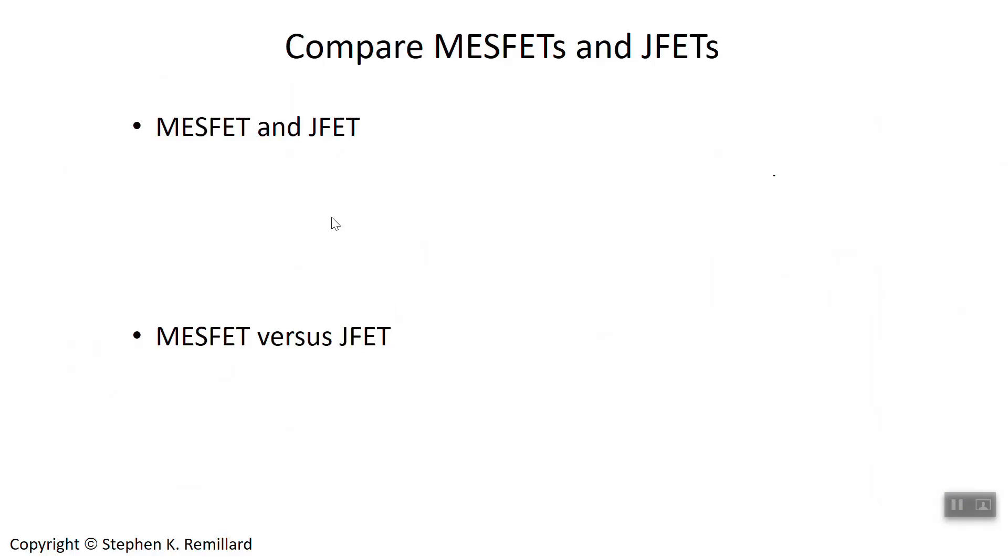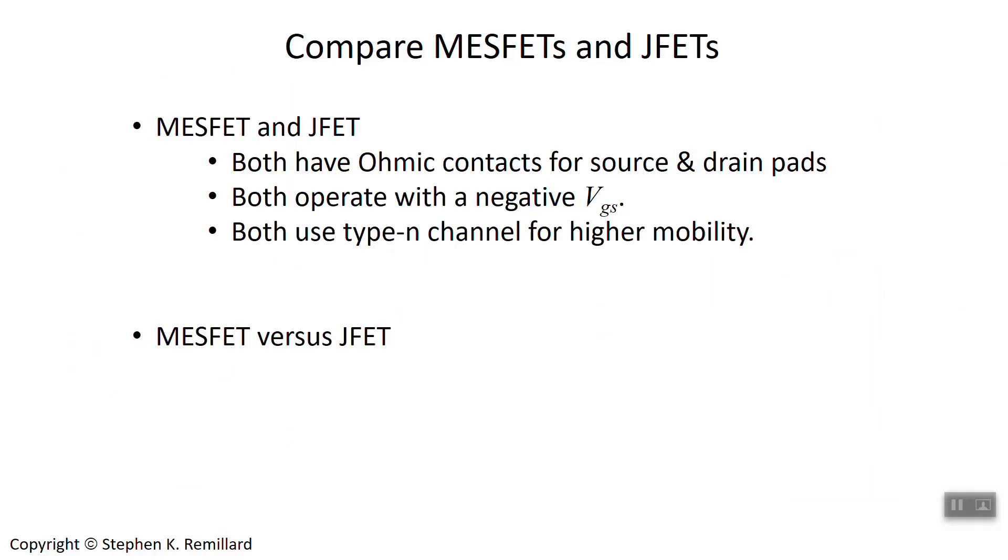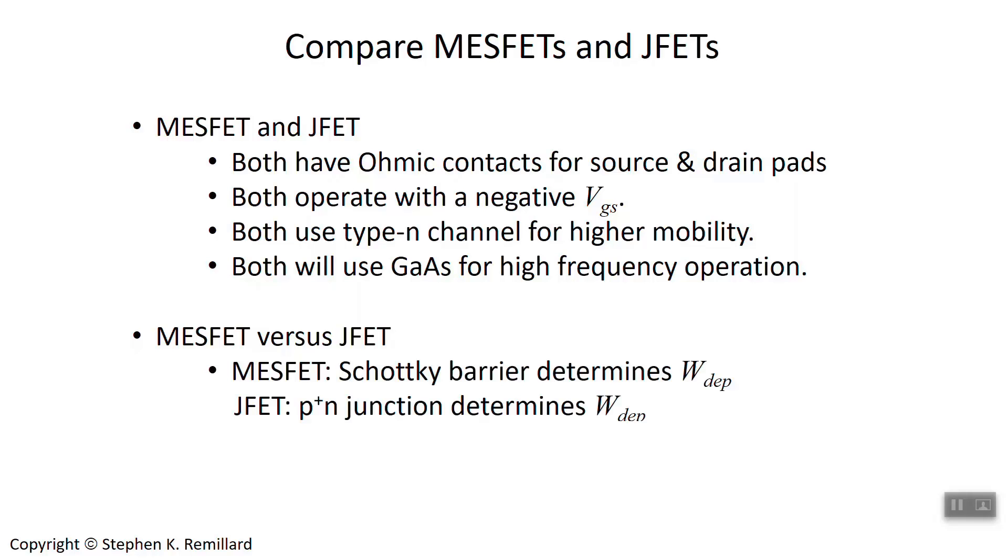Let's compare MESFET and JFET. First, what they have in common, then we'll see what's different. They both have ohmic contacts for source and drain pads. They both operate with negative gate voltage. They both use a type N channel because you want the high mobility for high speed, and they both usually use gallium arsenide for that same reason, to get the high mobility so you can have high frequency operation.